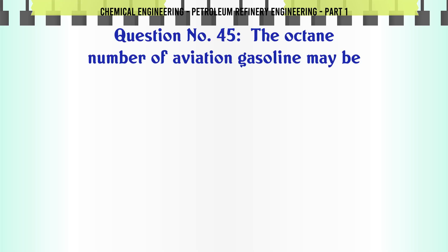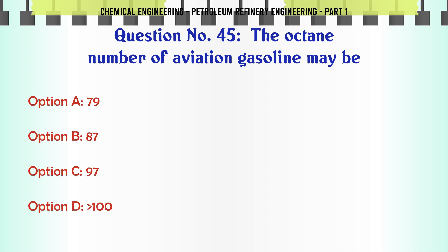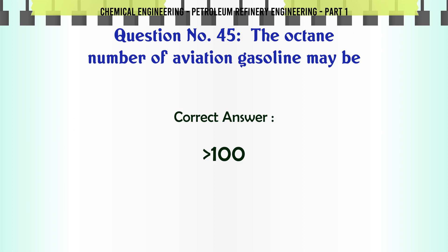The octane number of aviation gasoline may be: A. 79, B. 87, C. 97, D. 100. The correct answer is 100.